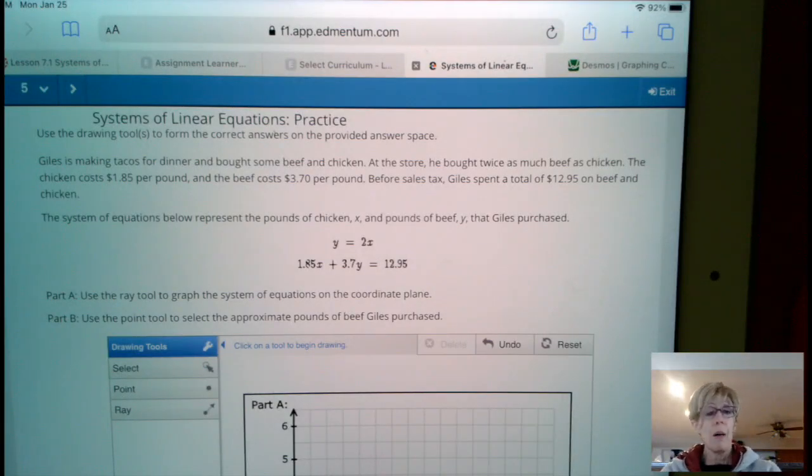Gilles is making tacos for dinner and bought some beef and chicken. At the store he bought twice as much beef as chicken. The chicken cost $1.85 per pound and the beef cost $3.70 per pound. Before sales tax, Gilles spent a total of $12.95 on beef and chicken.